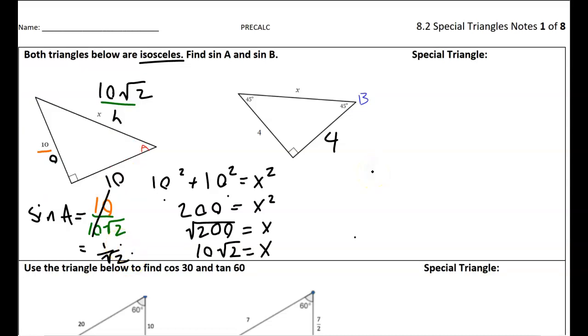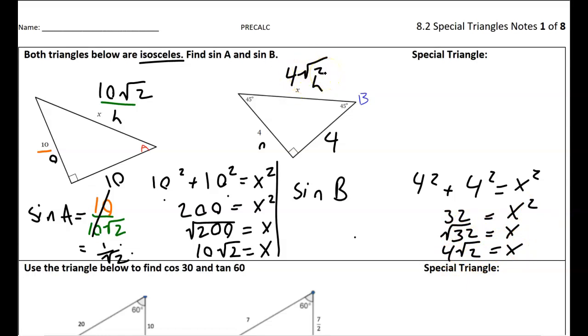Similarly here, to do sine of B, I need my opposite and my hypotenuse. So maybe you'll see the pattern here already, but I'd have to do 4 squared plus 4 squared equals X squared. And then 16 and 16 is 32. And then when I simplify, I get 4 root 2. So that's my hypotenuse. And notice again, I need my hypotenuse and my opposite, so it would be 4 over 4 square root 2. And notice these are the same. So this also reduces to 1 over square root 2. Or I could rationalize and say that's root 2 times 1 over 2.